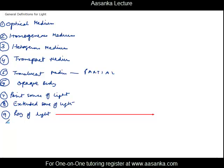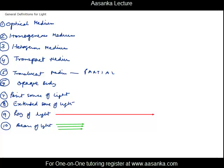If you are told about a beam of light, it essentially means a large number of rays of light moving together. So many rays moving together are called a beam of light.